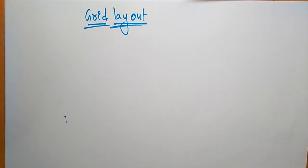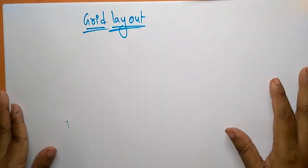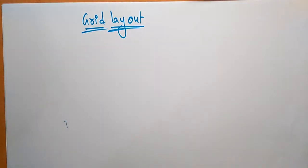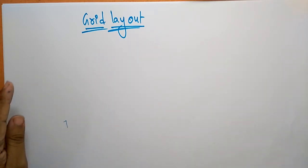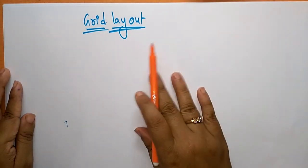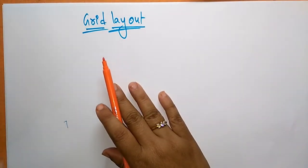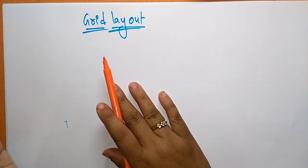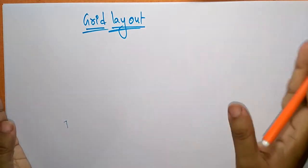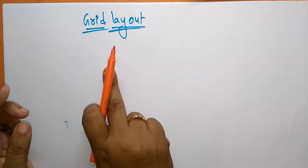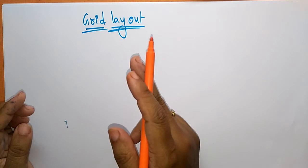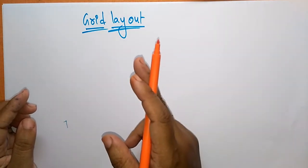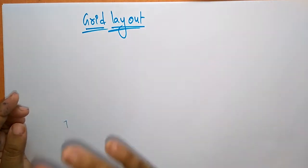Hi students, the next topic is the grid layout. We already seen the flex layout. A small difference is there between the flex layout and the grid layout. The flex box was designed for layout in one dimension — either a row or a column — whereas grid was designed for two dimensions, that is rows and columns at the same time.